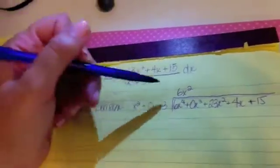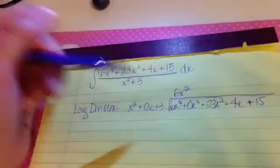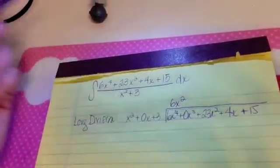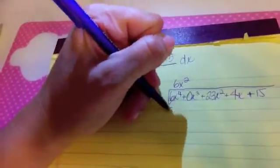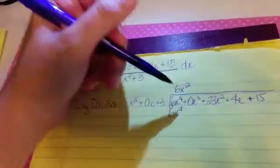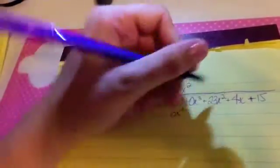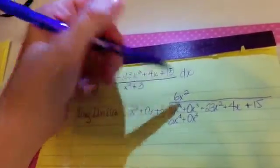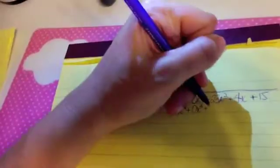All right, so then we'll take the 6x squared and we'll multiply it times the three terms in the divisor. We'll put it down here in the second line and we'll subtract. So we get 6x to the fourth. Multiplying it there, then 6 times 0 just gonna get the 0x cubed, and then there we got that multiplication there, we'll get 18x squared.